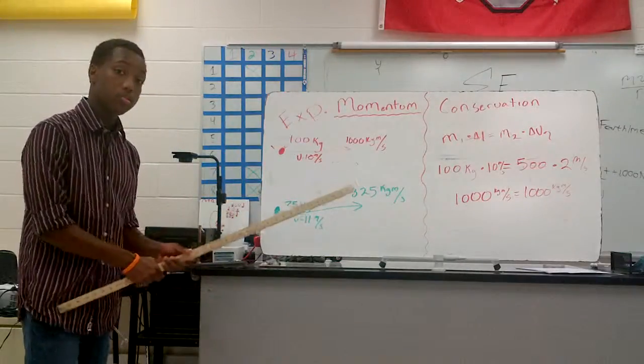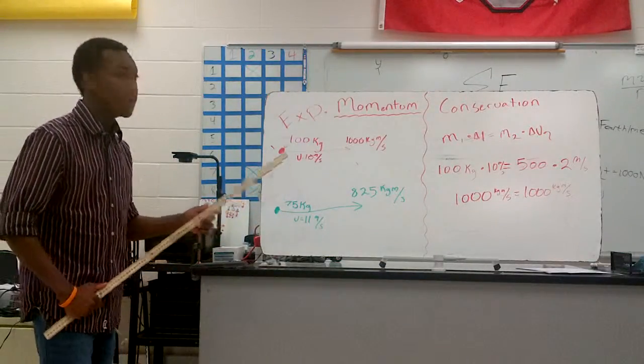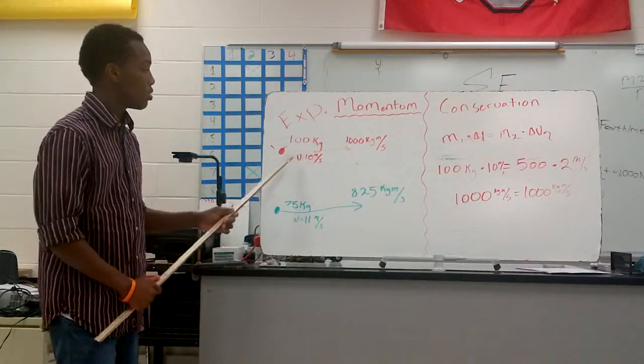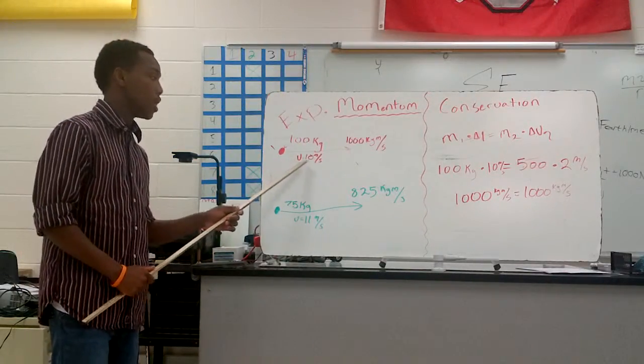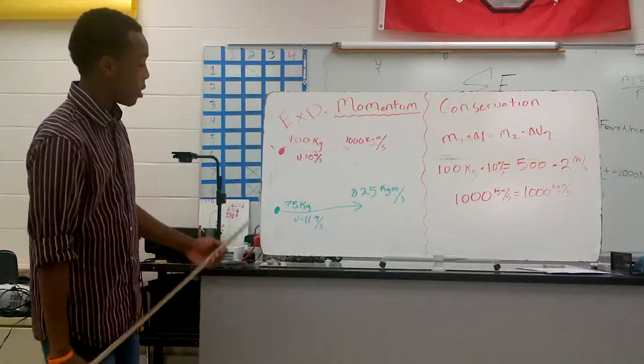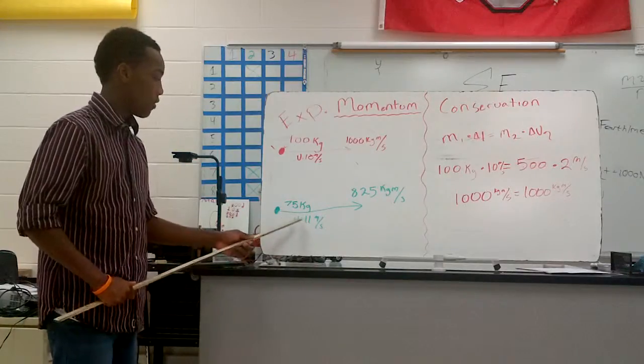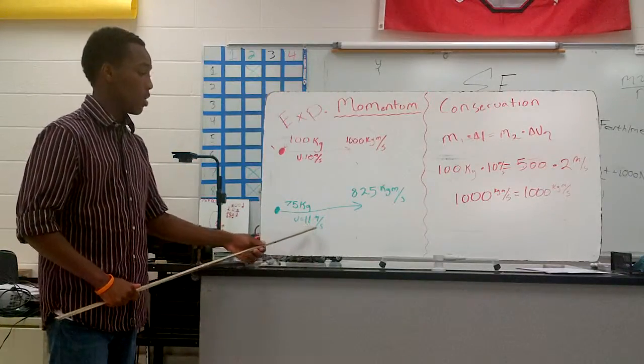For the momentum part, we have object red, which has 100 kilograms and goes at a velocity of 10 meters per second. We've got an object green, which is 75 kilograms and a velocity of 11 meters per second.